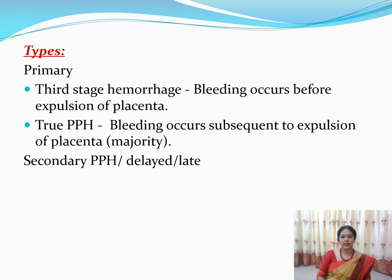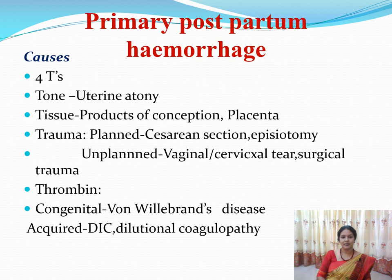True postpartum hemorrhage refers to bleeding that occurs subsequent to the expulsion of the placenta. Secondary postpartum hemorrhage is otherwise known as delayed or late postpartum hemorrhage. Now let us see the causes of primary postpartum hemorrhage.